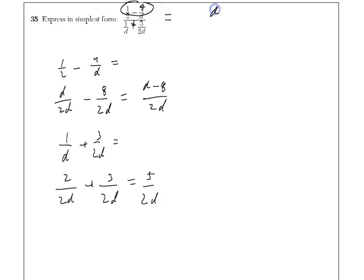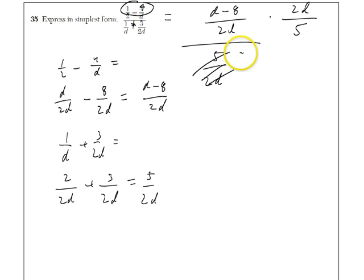So, back to this. It's d minus 8 over 2d over 5 over 2d. You divide fractions by multiplying by the reciprocal. These two d's cancel, and you get d minus 8 over 5, which is the answer to question number 35.